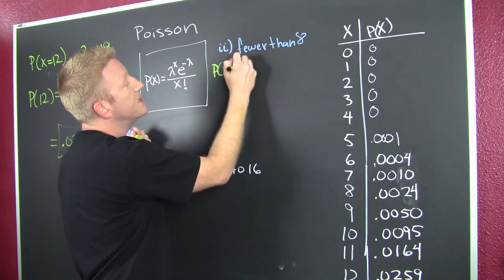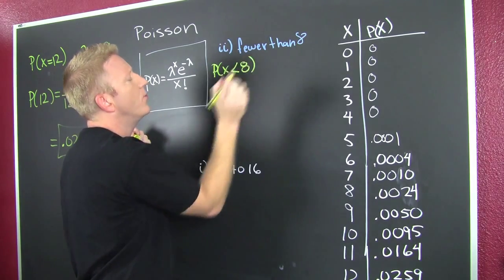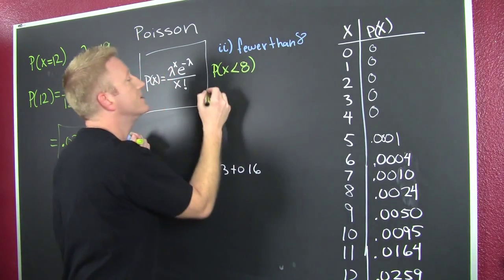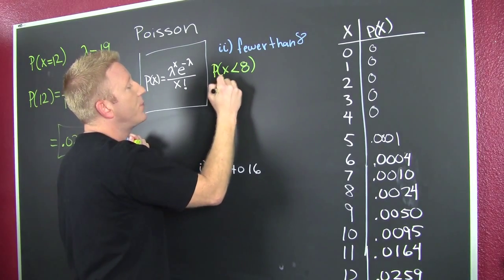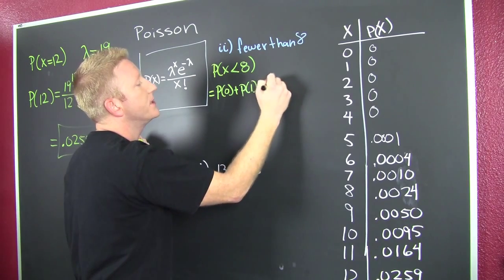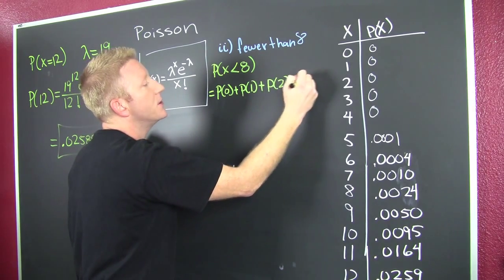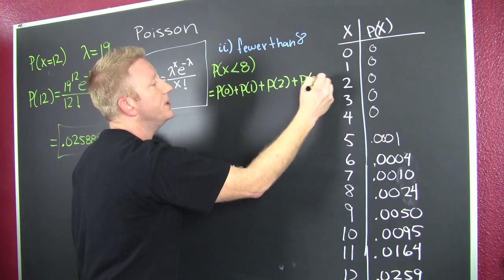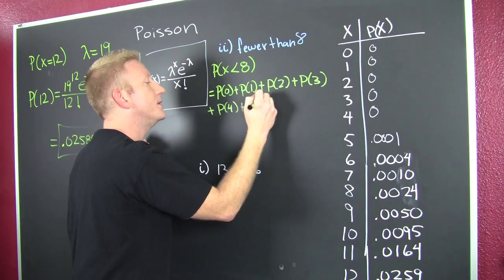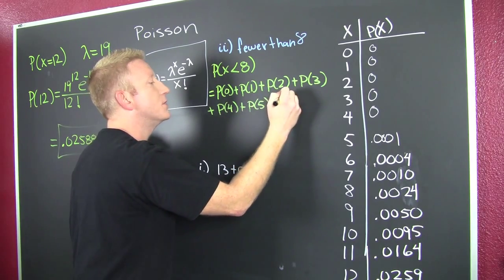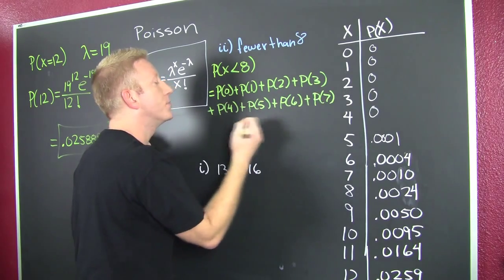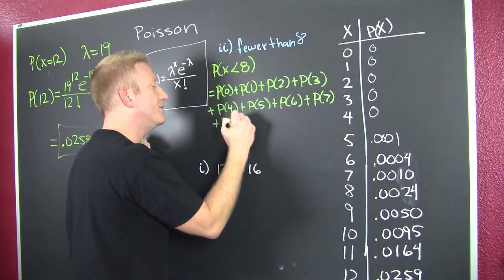This is the probability that X is smaller than eight. We don't include eight because it says fewer than. So we go: probability of zero, plus the probability of one, plus the probability of two, plus the probability of three, plus the probability of four, plus the probability of five, plus the probability of six, plus the probability of seven.